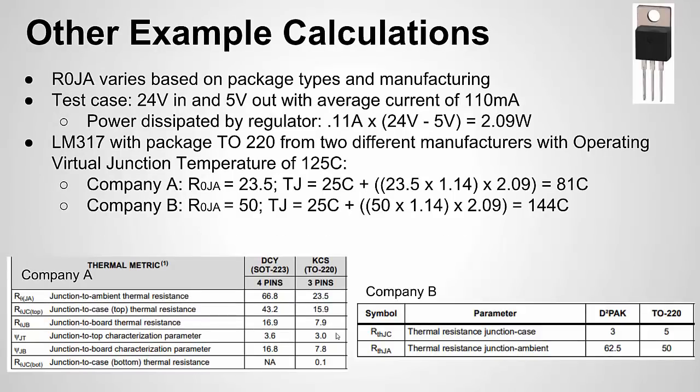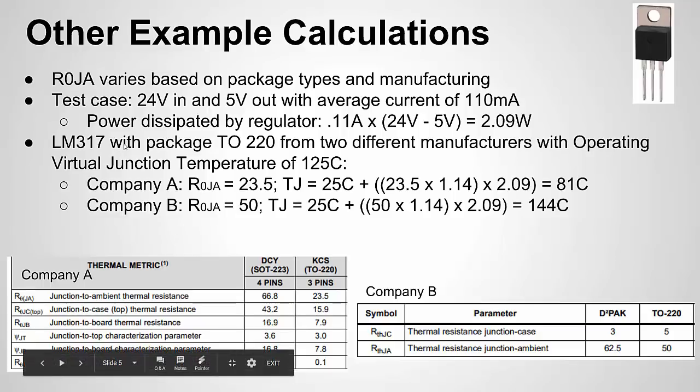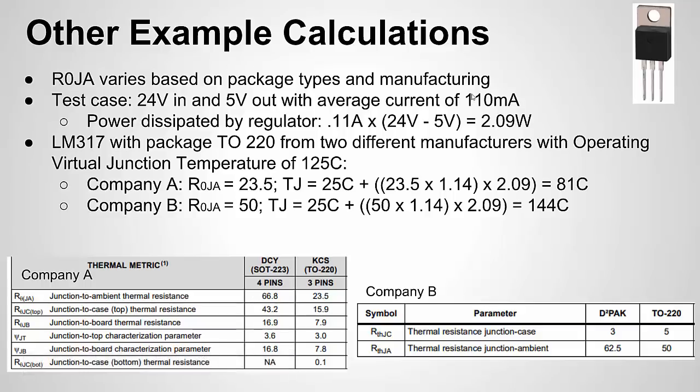I'm going to do another example and show how these specs can vary from company to company. If you look at two companies' chips that make the same exact chip, or at least the chip that does the same thing, sometimes one is priced higher than the other. It might be because of specs like this, because a lot of people don't consider these thermal specs if you're new to electronics. I made up a test case. I've been working with 24 volts lately. Let's say we have 24 volts in and want to get five volts out, and my average current consumption is going to be about 110 milliamps. First, I want to get the calculation of the watts that my regulator is going to be dissipating. I take the current times the voltage across it and get about 2.09 watts. I'm going to use an LM317 with a package TO220, which is shown here. It's a through hole package.